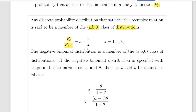Here, K specifies the number of occurrences for the second probability that corresponds to the numerator, and it goes from K equal to 1, 2, 3, and so on. As long as this corresponds to K and this corresponds to K minus 1 — essentially right beside each other in the sequence — we can use this formula.